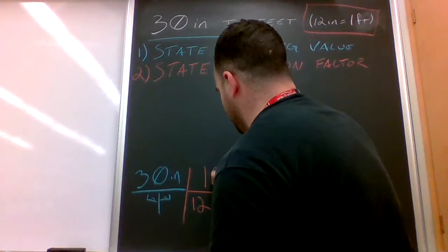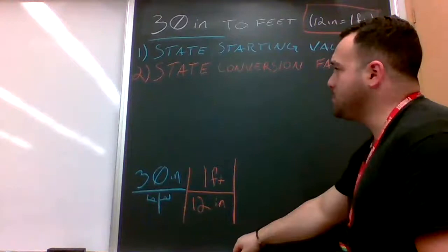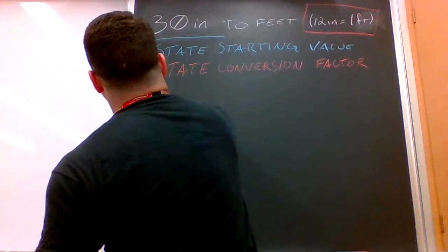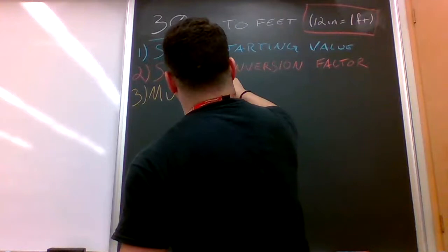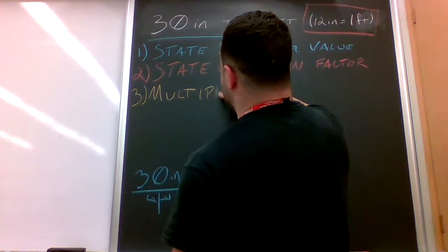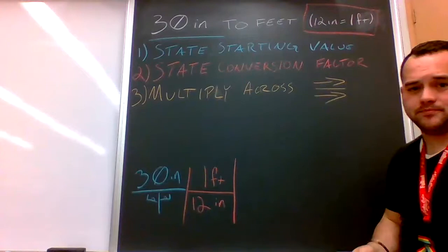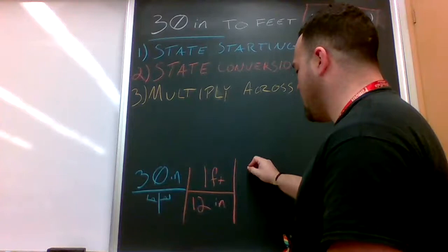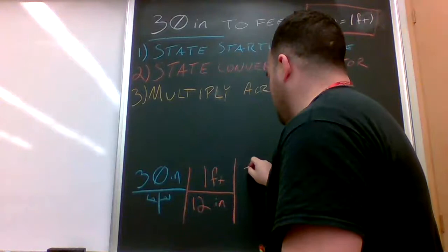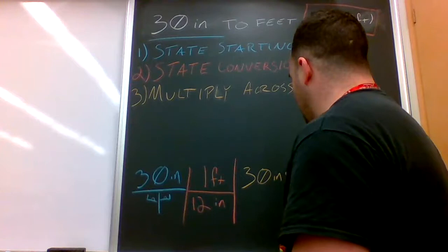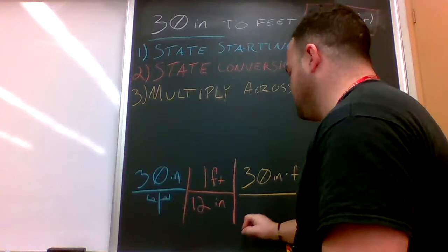The next step is to multiply across. Spelling is tough. So you want to go across the top and across the bottom. So 30 inches times one foot. We're going to write this out and put everything in one place. So we'll have 30 inches times feet divided by 12 inches times one, which is just 12 inches.